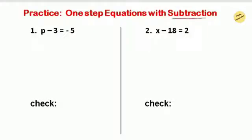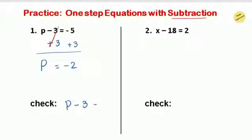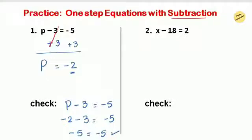Now we have subtraction equations, so we do the inverse — addition. The first question: p minus 3 equals negative 5. We add positive 3 to both sides. Positive 3 and negative 3 cancel, leaving p. On the right, we have two different signs, so we subtract and keep the greater number's sign: 5 minus 3 equals 2, giving p equals negative 2. To check: substitute p as negative 2 — negative 2 minus 3 equals negative 5. Same signs mean we add: 2 plus 3 is 5, with a negative sign, confirming negative 5 on both sides.